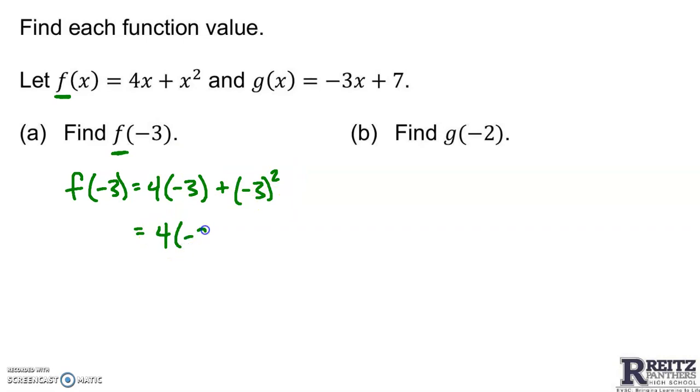The first thing I should do is square my negative 3. I've got 4 times negative 3 plus, what is negative 3 squared? Yeah, it's positive 9. Next I should multiply. 4 times negative 3 is negative 12. And negative 12 plus 9 is negative 3. So f of negative 3 equals negative 3.